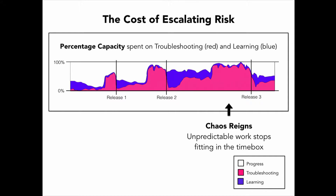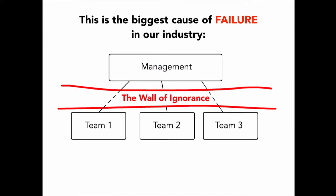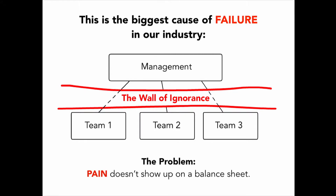We're talking about 50, 70, 90% of our development capacity sometimes dealing with all this chaos and problems, but we're failing miserably to communicate what's going on to our management. This is the biggest cause of failure in our industry — that disconnect. We're trying to explain the problems in terms of increasing cost, but I think we need to start reframing things in terms of increased risk and quantifying that in a way that we can all get on the same page. The fundamental problem is that pain doesn't show up on a balance sheet, and when we're running by the numbers, it's really hard to quantify all this stuff.